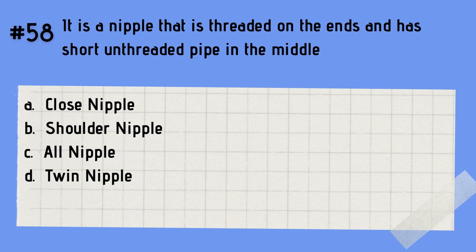Question 58: It is a nipple that is threaded on the ends and has a short unthreaded pipe in the middle. A. Close nipple. B. Shoulder nipple. C. All nipple. D. Twin nipple. The answer is B — shoulder nipple. A shoulder nipple is a nipple that is threaded on the ends and has a short unthreaded pipe in the middle.